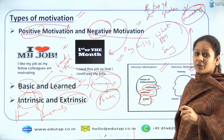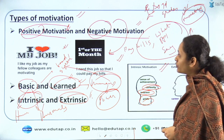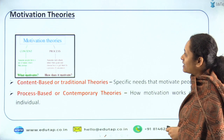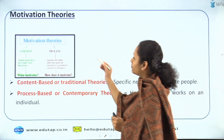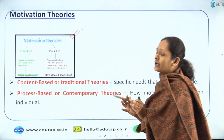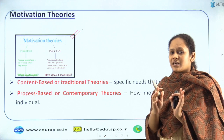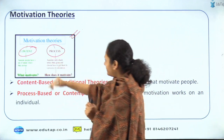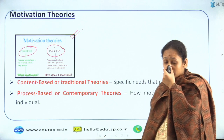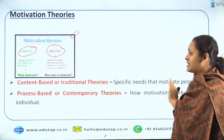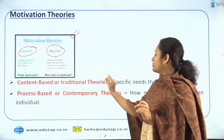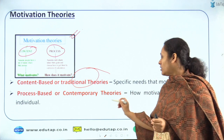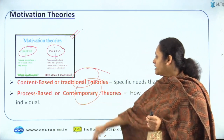I hope you understood the different types of motivation. Now let us understand the different types of motivation theories. There are two classifications: one is content theory and the other is process theory. Content theory is also known as traditional theory, and process theory is also known as contemporary theory.